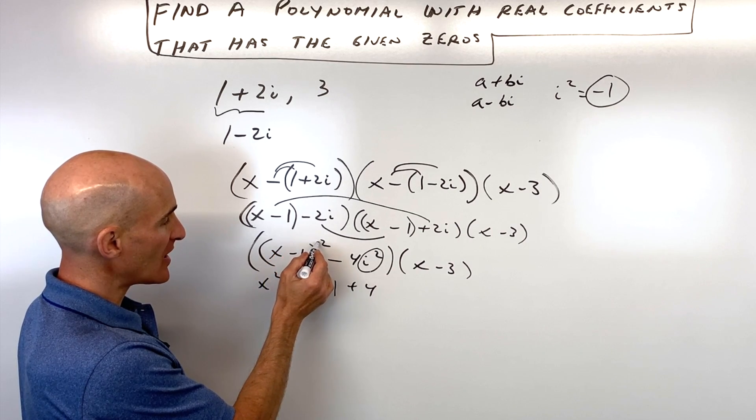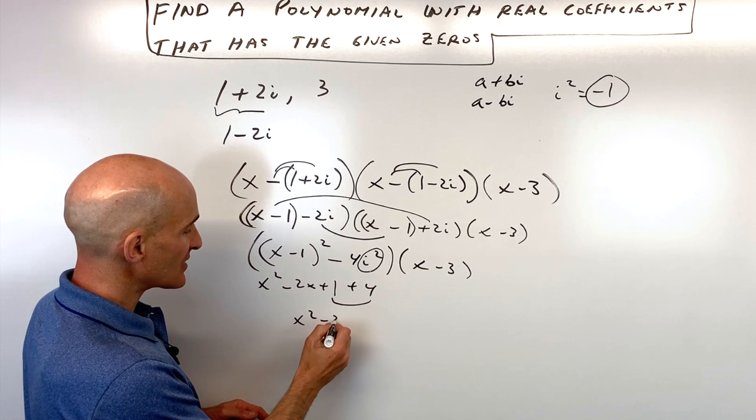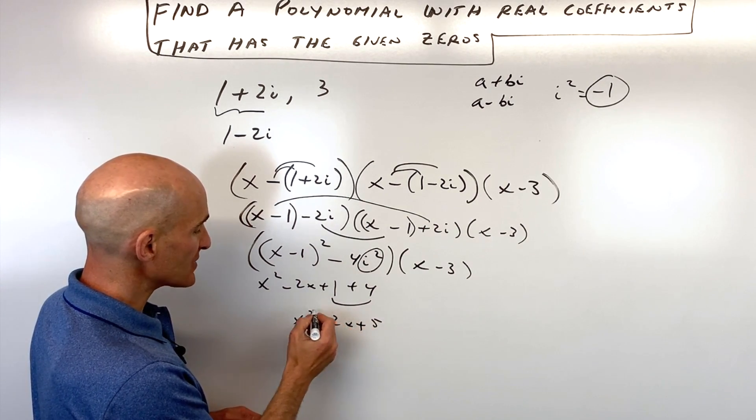Don't make the confusion of just trying to distribute that power, you actually have to FOIL this out. And then the one and the four, that's going to give us x squared minus two x plus five.